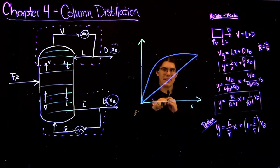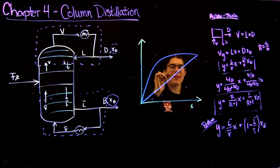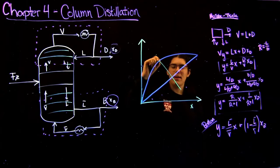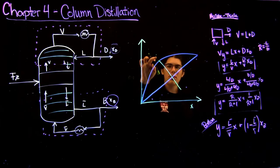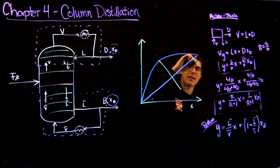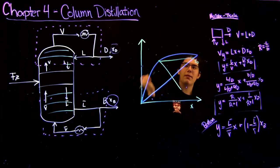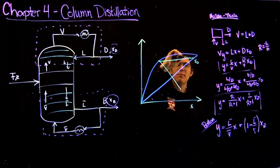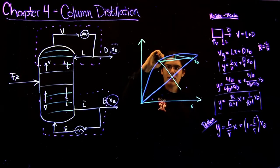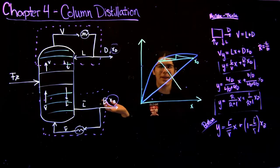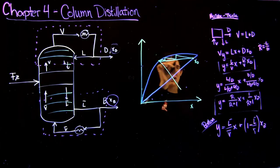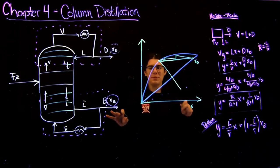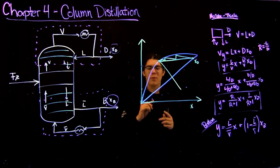One final thing: the definition of L over V minimum, or minimum reflux ratio. On the graph, extend your Q line to where it intersects the equilibrium line, then draw a line from that intersection point to your XD point. That line represents the pinch point. If you try to step off stages to that pinch point, you'll find that no matter how many stages you draw, you can't get to it — the number of stages goes to infinity. The slope of that line represents your minimum reflux ratio. I know this was a little theoretical, but it should become clear when we work through a problem in the next video.